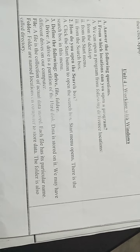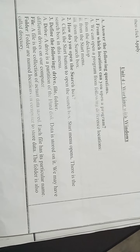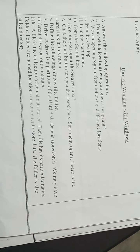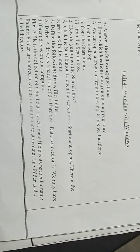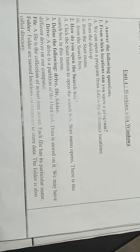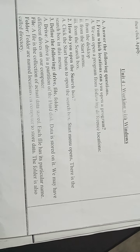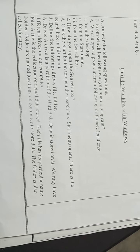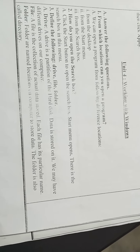Second heading, let's see file. A file is a collection of actual data stored. Each file has its particular name. Third heading is folder. Folders are named locations on a computer to store data. The folder is also called a directory.